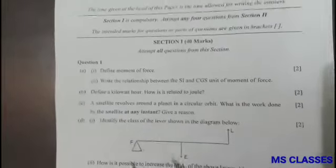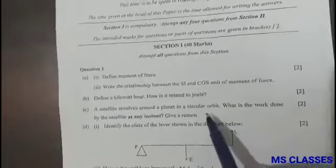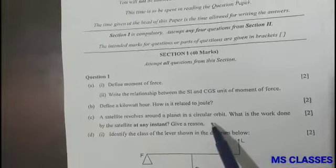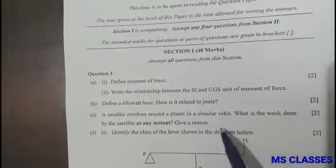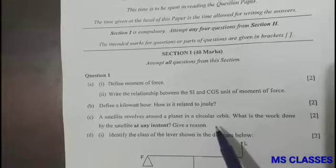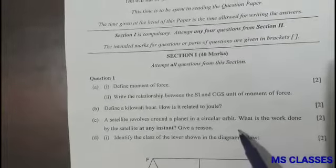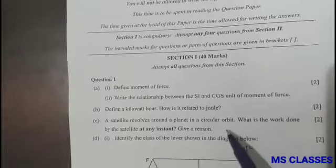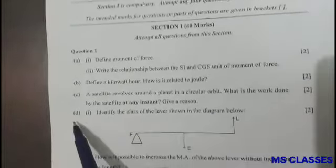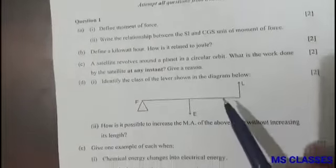Part (c): A satellite revolves around a planet in a circular orbit. What is the work done by the satellite at any instant? Give a reason. The answer is zero because the angle made by the force and displacement is 90 degrees. As work done is F·S·cos(theta) and cos(90) is zero, therefore work done will be zero.